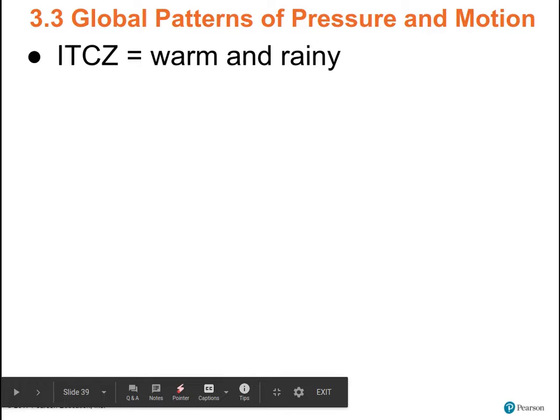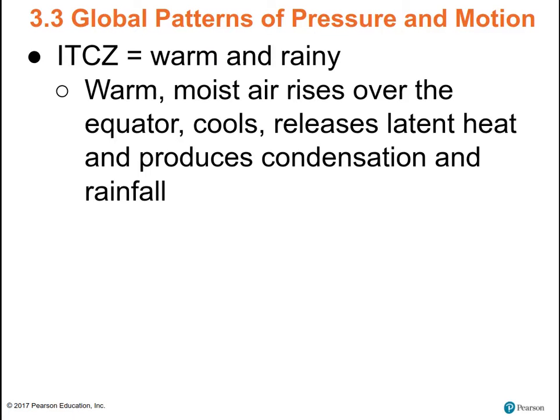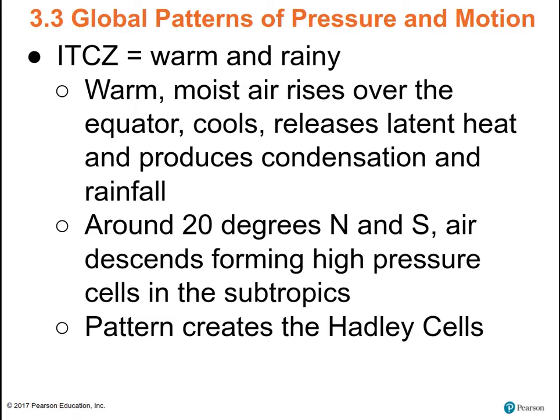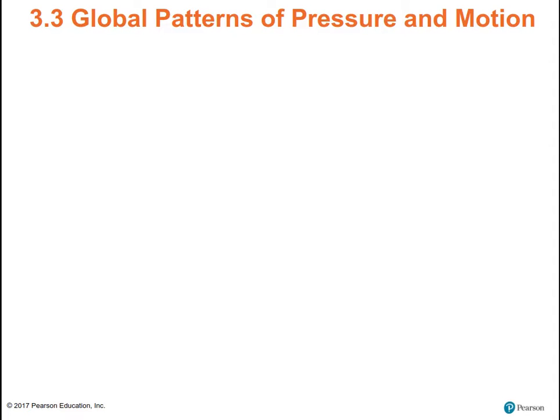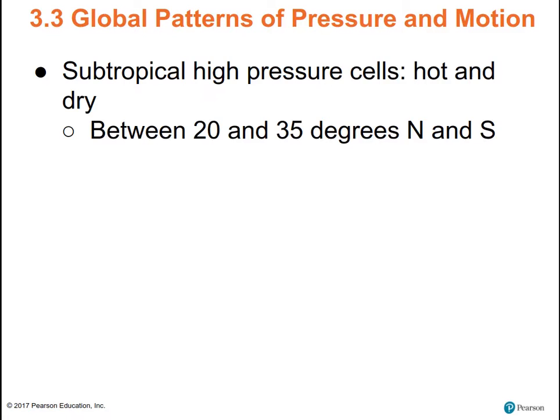These are the general characteristics of the four pressure belts. The ITCZ: warm and rainy — warm moist air rising over the equator cools, giving lots of rain and condensation. Around 20 degrees north and south, that air starts to sink, making the high-pressure cells in the subtropics — that rising air over the equator sinking over the subtropics creates the Hadley cells. The subtropical high-pressure cells — the Hawaiian high, the Azores high, the Bermuda high — are hot and dry, between 20 and 35 degrees north and south. That's where the world's deserts are: clear, cloudless skies powered by the Hadley cells and sinking air.